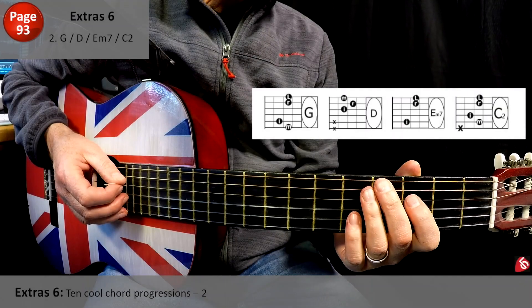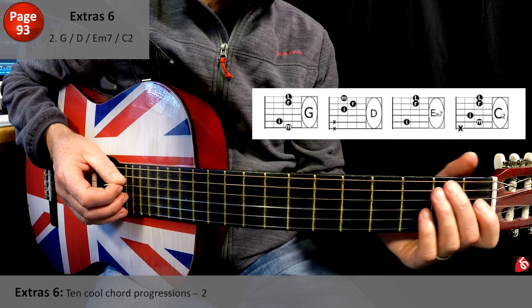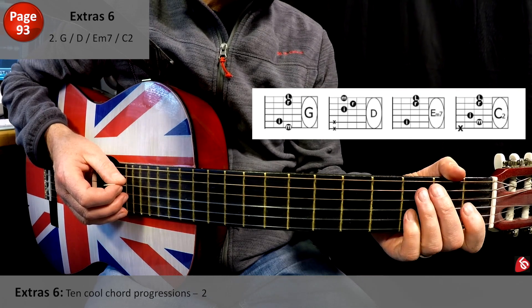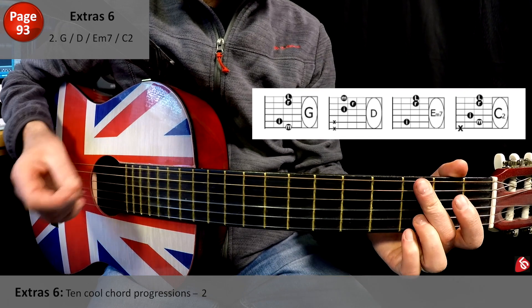OK, let's look at some cool chord progressions. I've got a whole list here, so we're just going to crash through. Let's look at number 2, and it's G, D, E minor 7, C2.